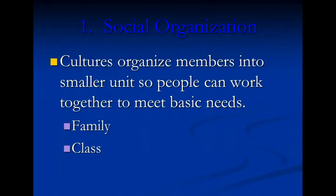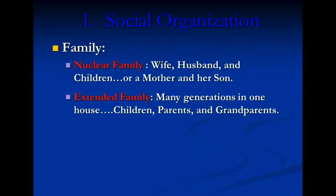The first element is social organization. Cultures organize members into smaller units so people can work together to meet basic needs. The two ways many cultures organize are by family and class. Family can be one of two different things: the nuclear family, which is wife, husband, and children — really the immediate family — or extended family, where many generations are in one home: children, parents, grandparents.